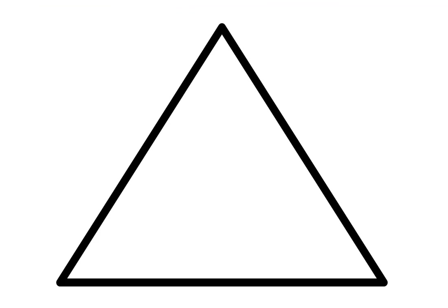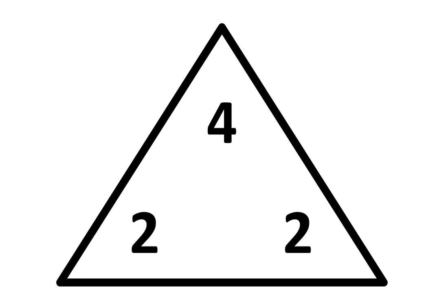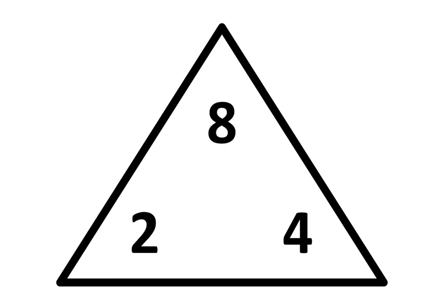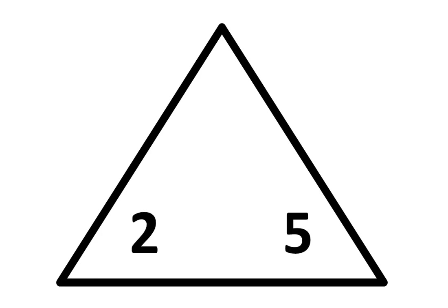This is the first triangle. In the first triangle, write 2 times 2 is equal to 4. Remember, you can pause the video at any point. In the second triangle, write 2 times 3 is equal to 6. In the next triangle, write 2 times 4 is equal to 8. In the next triangle, write 2 times 5 is equal to 10.